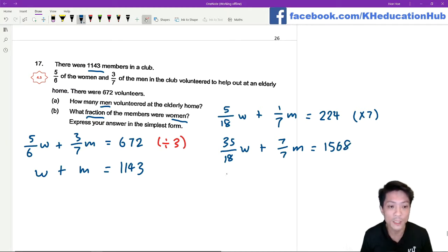Which means that if the total women plus the total men equals 1143, we're gonna look at these two and these two.